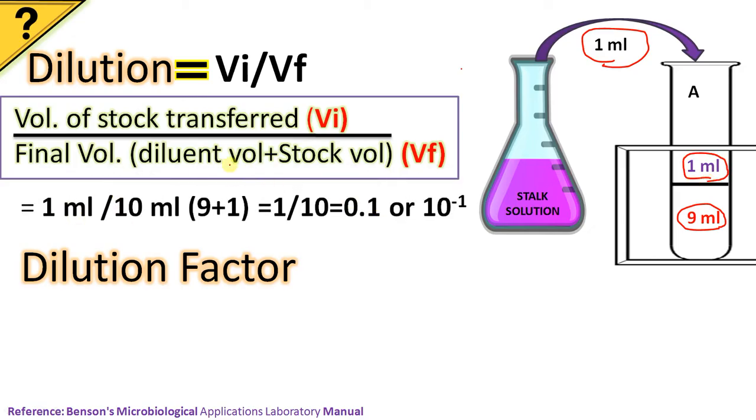Therefore 1 by 10, that is equal to 1 by 10th dilution, or it can be written as 0.1 or 10 raised to minus 1 dilution. So this is the dilution of test tube A.